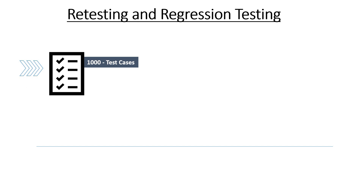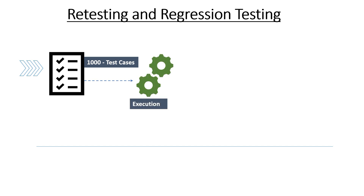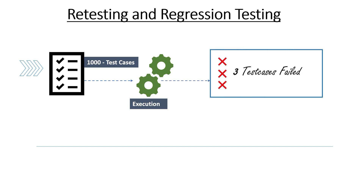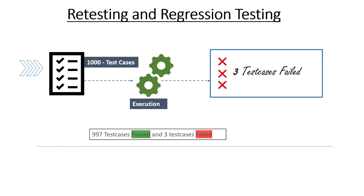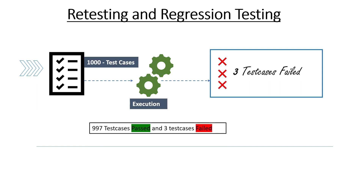Let's assume we have written 1000 test cases for one functionality. After writing those 1000 test cases, we send them for execution. After executing all 1000 test cases, let's say the results come back: 997 test cases pass and 3 test cases fail.